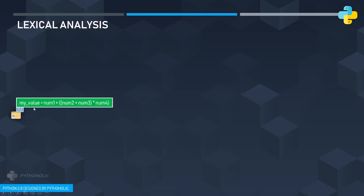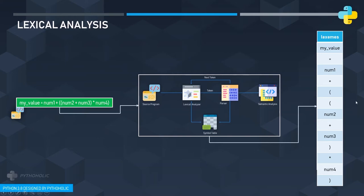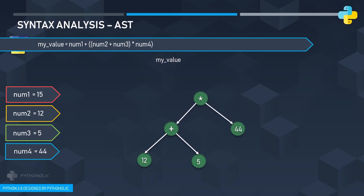Here's an example: for a single-line program 'my_value = num1 + num2 + num3 * num4', when fed to the interpreter, the lexical analyzer produces individual tokens or lexemes, which are then sent to semantic analysis. Before semantic analysis, there is syntax analysis, where the tokens generated are taken and structured together to form an Abstract Syntax Tree. For example: num1 + num2, then + num3, then * num4 — following the order of operations.